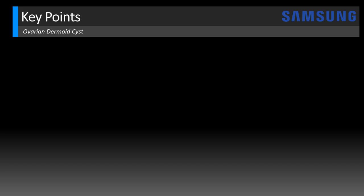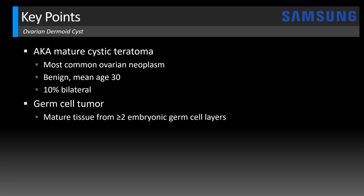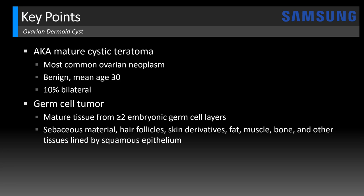Now we'll talk about some key points for dermoid cysts, which you can find in the episode show notes. These are also known as mature cystic teratomas. They're the most common ovarian neoplasm and they're benign. The mean age is 30 and they're 10 percent bilateral — so if you find one on one side, make sure you look at the other ovary closely because there may be a companion dermoid. They're germ cell tumors, meaning they have mature tissue composed of two or more embryonic germ cell layers — that could be sebaceous material, hair follicles, skin, fat, muscle, bone, and other tissues that are lined by squamous epithelium.